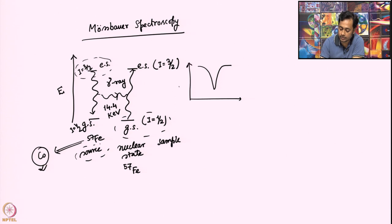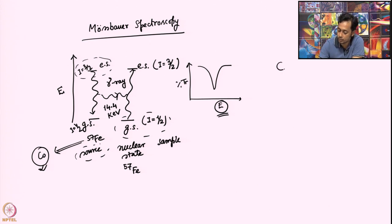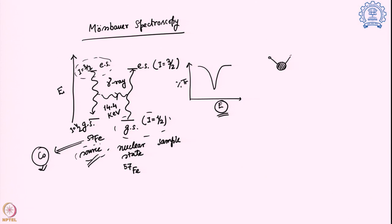One axis is percent transmittance and the other is energy. What kind of energy axis do we use? To understand that, we need to know how the experiment is performed. We have a nucleus or atom of a source sample — the source is placed in a solid matrix or lattice.